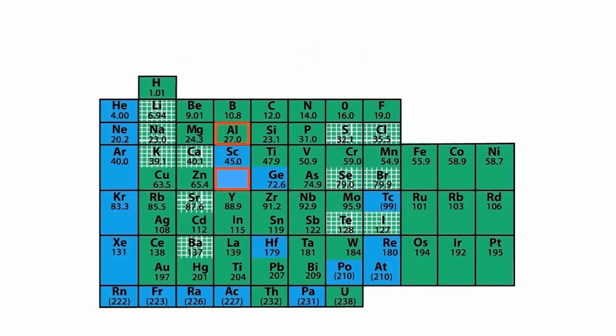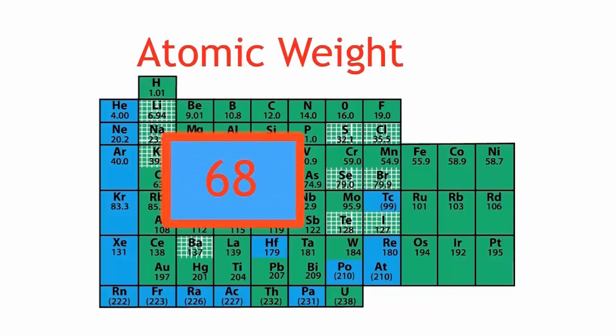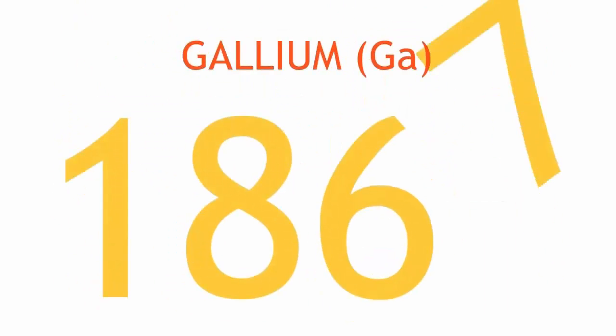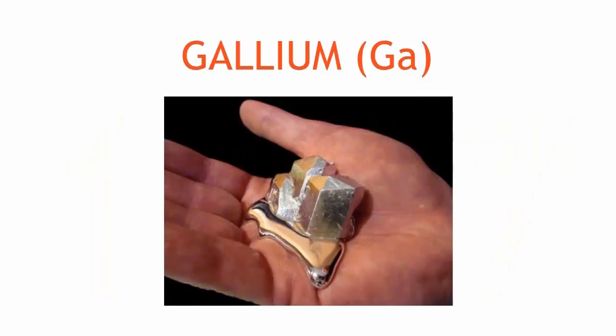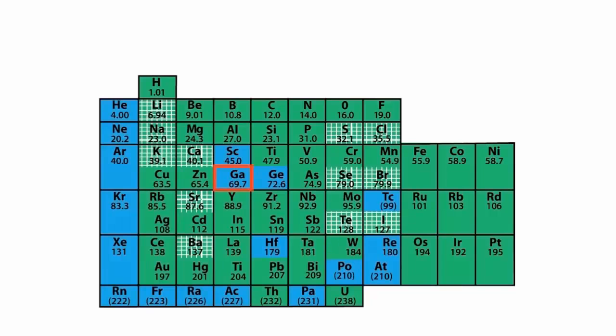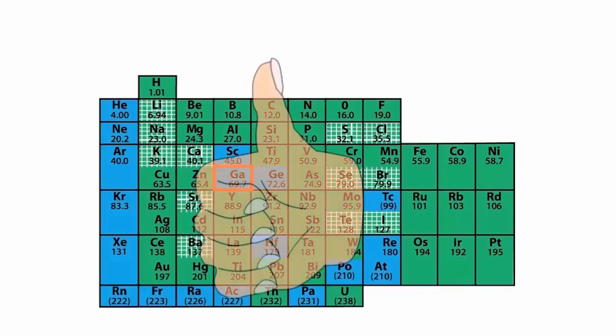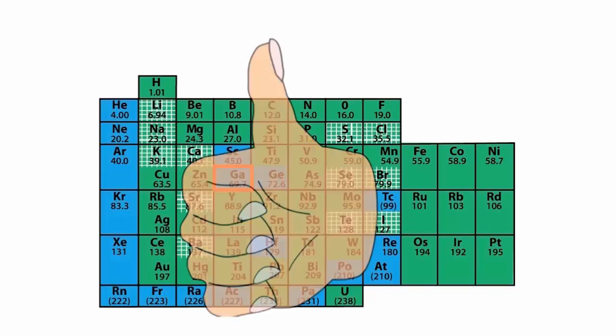One of the gaps in Mendeleev's table was found below aluminum. He predicted the properties of this mystery element and that it would have an atomic weight of around 68. In 1867, gallium was discovered, the mystery element. Mendeleev's predicted properties matched this new element's properties almost exactly, marking a turning point in the world of chemistry.